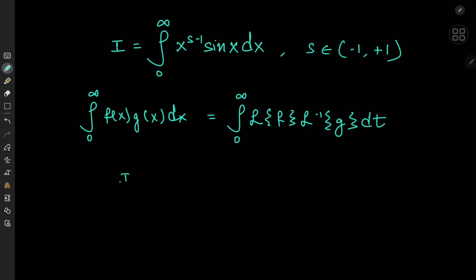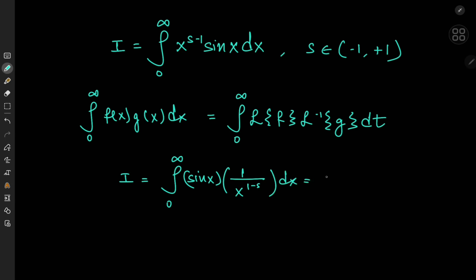So let's take our target integral I and write this as the integral from zero to infinity of sin(x) times one over x to the one minus s. That means our integral is going to be equal to the integral from zero to infinity of the Laplace transform of sin(x) times the inverse Laplace transform of one over x to the one minus s, dt.